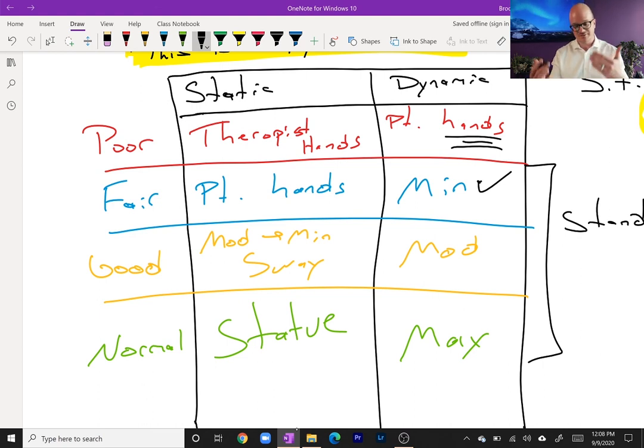But at least the main thing we know is we don't need to put any hands on the patient. They should be able to be independent or standby assist, right, at least for very basic things. So minimal balance or a fair balance is accepting a minimal challenge. What that is, again, very subjective. Good—accept a moderate balance. Normal—accept a maximal challenge.